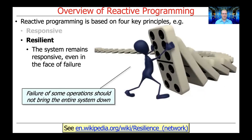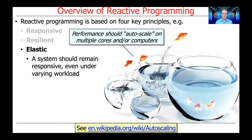Another key principle of reactive programming is resilience, which means that the system will remain responsive even if some operators, streams, or computations fail. In particular, failure of one operation or a small set of operations shouldn't bring the entire system down. You want to make the system resilient to partial failure.